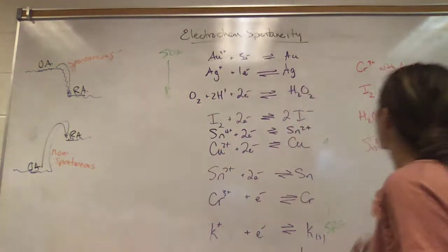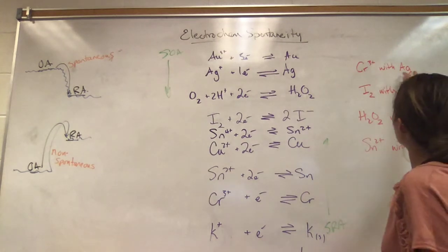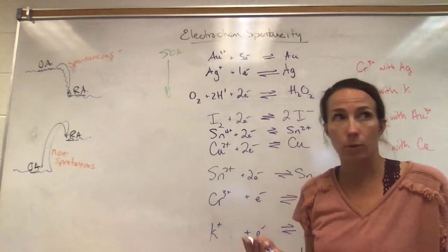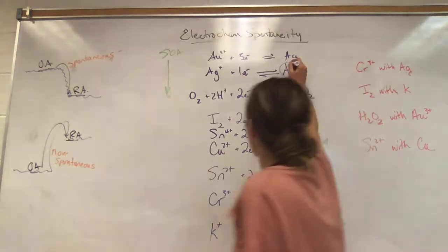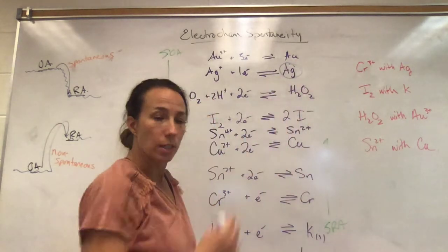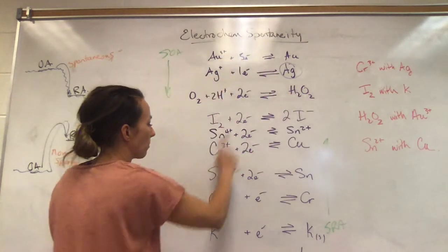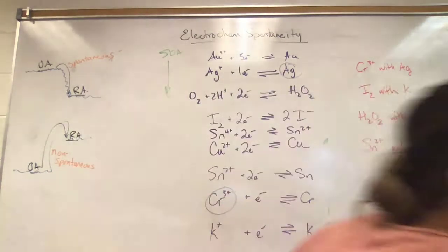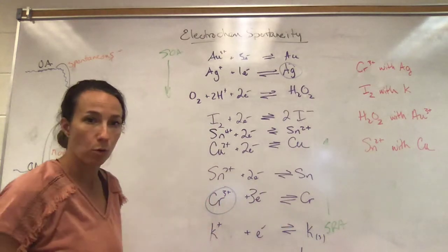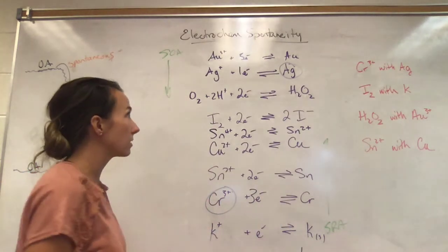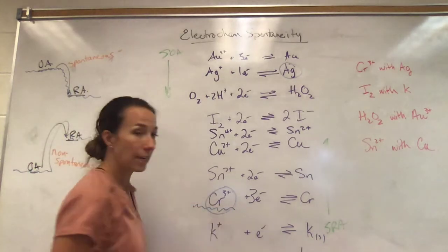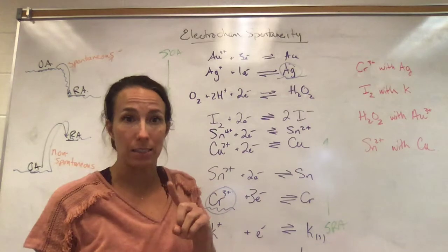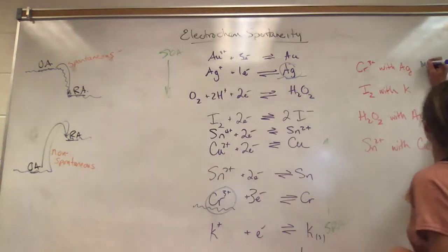We're going to do the waterfall rule to predict if these reactions are going to be spontaneous or not. If I take a piece of silver and put it in a Cr³⁺ solution, will there be evidence of a reaction? Silver is my reducing agent — metals are reducing agents. Chromium 3-plus is going to gain three electrons to become chromium solid — that's the oxidizing agent. According to the waterfall rule, the oxidizing agent is below the reducing agent, so this water can't go uphill. This is a non-spontaneous reaction.